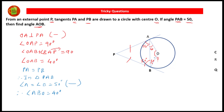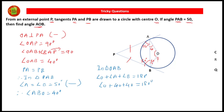In triangle OAB, angle OAB is 40 degrees and angle OBA is 40 degrees. The sum of all three angles is 180 degrees, so angle O plus 40 plus 40 equals 180 degrees. Therefore angle AOB equals 180 − 80 equals 100 degrees. The required angle AOB is 100 degrees.